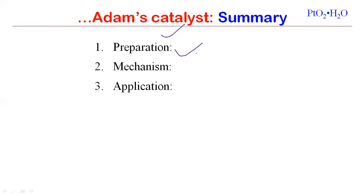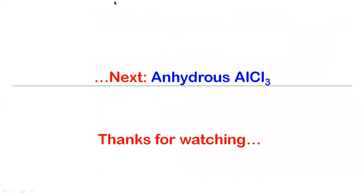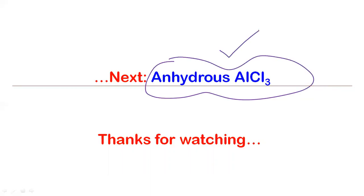In summary for Adam's catalyst: we know the preparation and how it works. The mechanism is heterogeneous catalysis. The key application is that we can prepare more than 80 percent alkane from alkyne using platinum oxide. I hope this lecture helps you learn the fundamental aspects of Lindlar's catalyst and Adam's catalyst — their structure, composition, applications, and the heterogeneous mechanism. Next we will discuss anhydrous AlCl₃, an important reagent for many synthetic transformations.